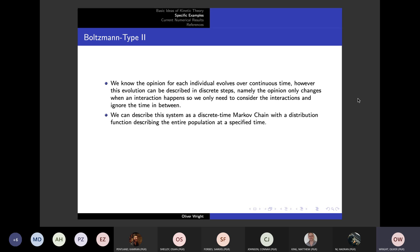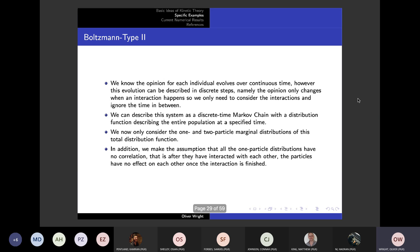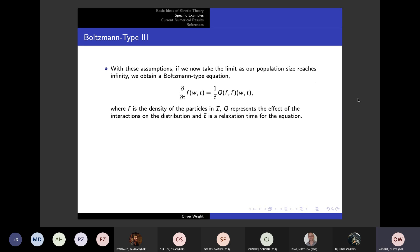We discuss that because of the way this works out, because once they've interacted, they don't really interact again unless they hit each other later on, we can discuss this as a Markov chain which has a distribution function that specifies the whole population.